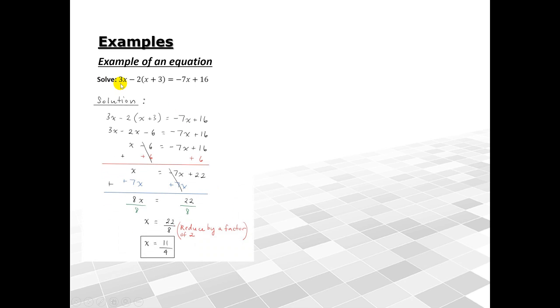I want to solve 3x minus 2 times x plus 3 equals negative 7x plus 16. Looking at my solution here, notice I wrote an equal sign with each and every step. I work down, and even use color to show each step.